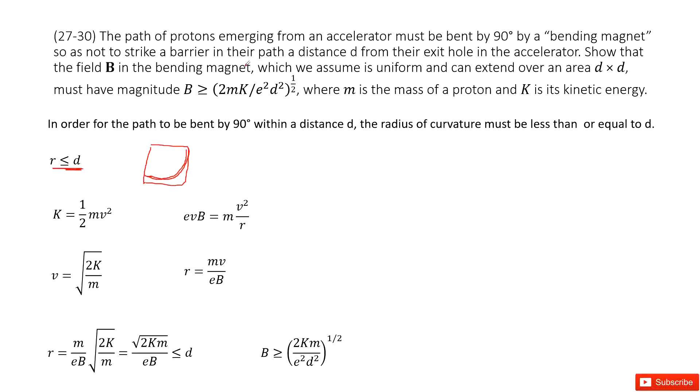And now you need to prove the magnetic field B is much larger than this term. Another quantity given is the proton's kinetic energy. So we are straightforward.